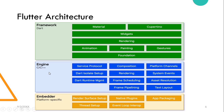At the core of Flutter is the Flutter engine, which is mostly written in C++ and supports the primitives necessary to support all Flutter applications. The engine is exposed to the Flutter framework through the Dart UI package, which wraps the underlying C++ code in Dart classes. Typically, the developer interacts with Flutter through the Flutter framework, which provides a modern reactive framework written in the Dart language.